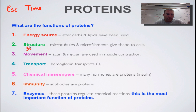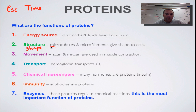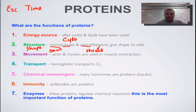Structure basically means shape. How does a cell keep its shape? It does so through an interconnecting network of two types of proteins. The first is microtubules — 'micro' means small and 'tubules' means tubes. The second is microfilaments — 'micro' means small and 'filaments' means thread. So we have a network of tiny tubes and tiny threads that form a scaffolding called the cytoskeleton. Just like your skeleton gives you shape and support, this network of microtubules and microfilaments gives a cell its shape.